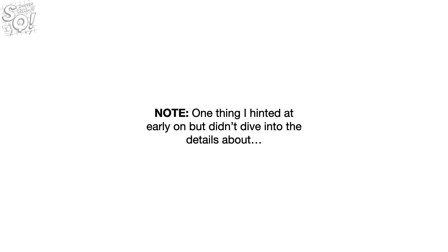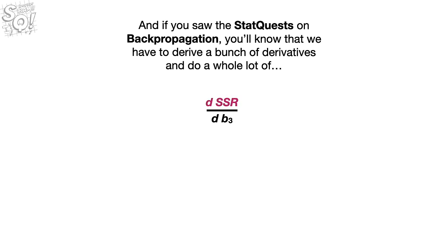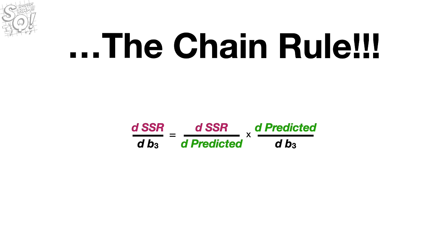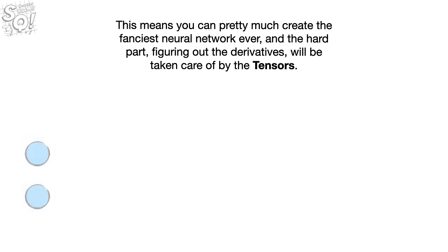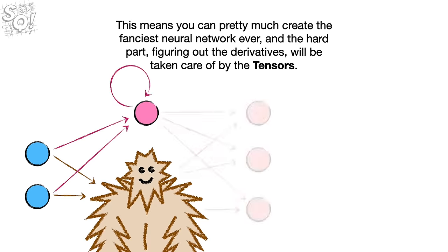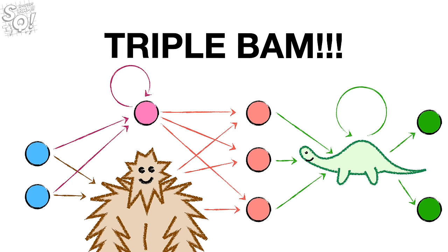Note, one thing I hinted at early on, but didn't dive into the details about, is that one of the things we do with neural networks is estimate the optimal weights and biases with backpropagation. And if you saw the StatQuest on backpropagation, you'll know that we have to derive a bunch of derivatives and do a whole lot of THE CHAIN RULE! Well, one more cool thing about tensors is that they take care of backpropagation for you with automatic differentiation. This means you can pretty much create the fanciest neural network ever, and the hard part, figuring out the derivatives will be taken care of by the tensors. TRIPLE BAM!